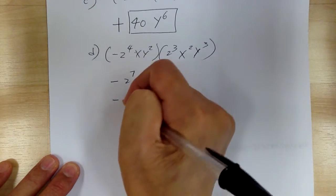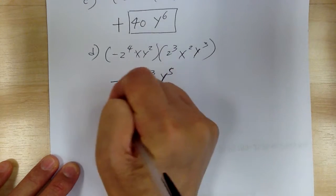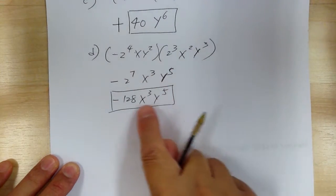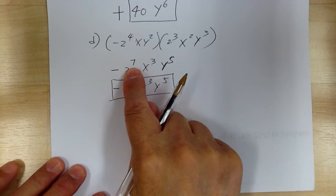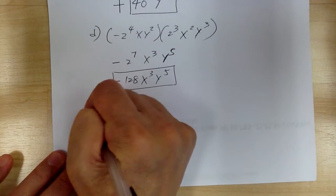So multiply, you can use calculator, right? So negative 128 x to the 3, y to the 5. So make sure you know how to use your calculator to do this, to do the exponents. If you don't, then you need to ask for help. I will come and help you how to do that.